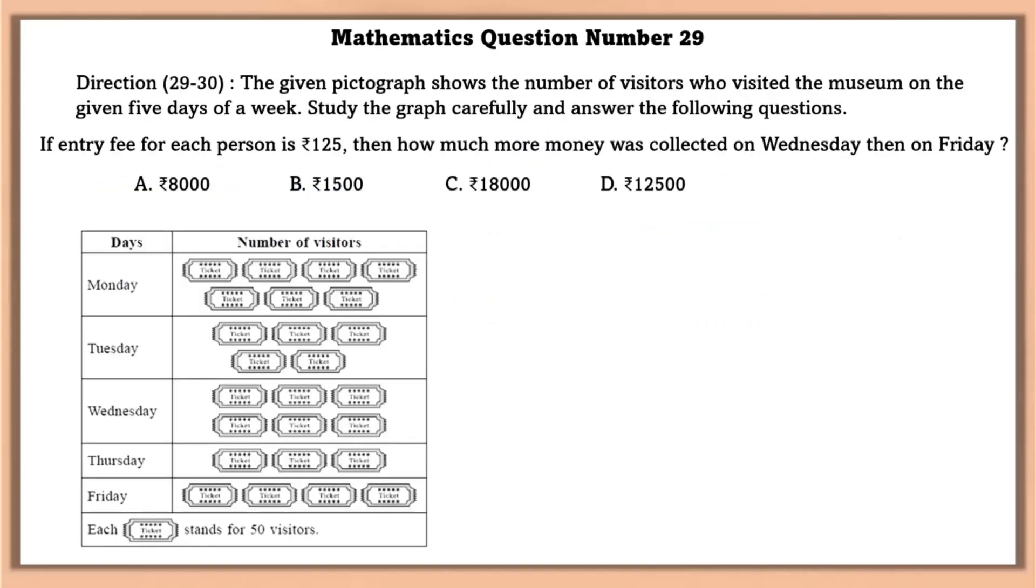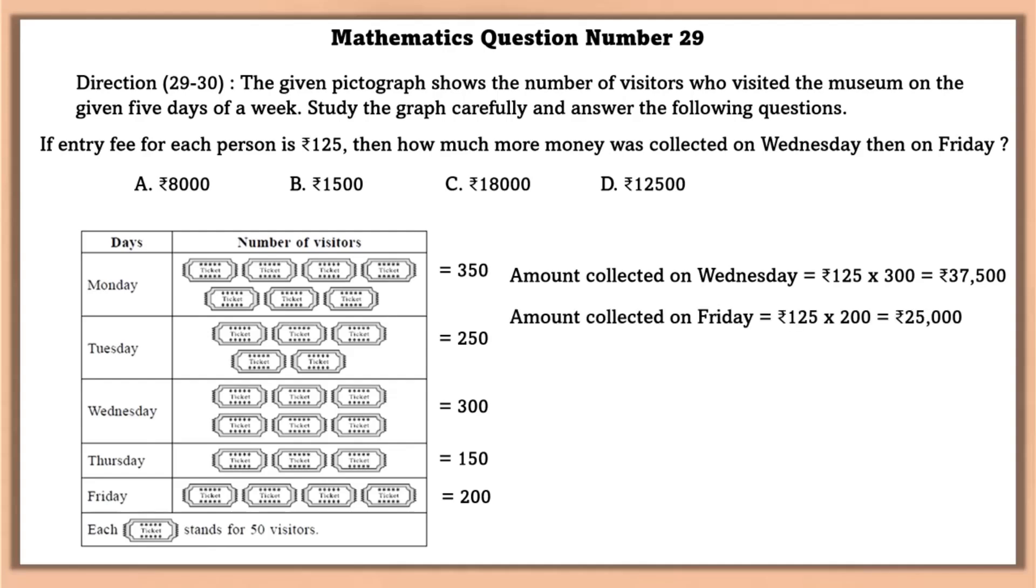Mathematics question number 29. The given pictograph shows the number of visitors who visited the museum on given 5 days of a week. Study the graph carefully and answer the following questions. If entry fee for each person is 125 rupees, then how much more money was collected on Wednesday than on Friday? Amount collected on Wednesday is equal to 125 into 300 which is equal to 37,500 rupees. Similarly, amount collected on Friday is equal to 25,000 rupees. 12,500 rupees more money was collected on Wednesday than on Friday.